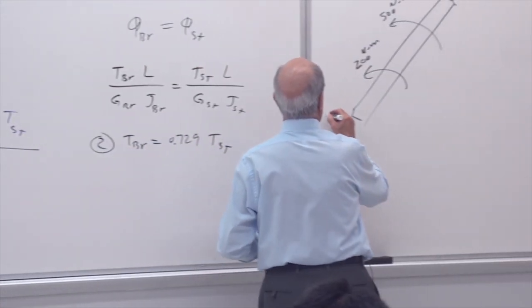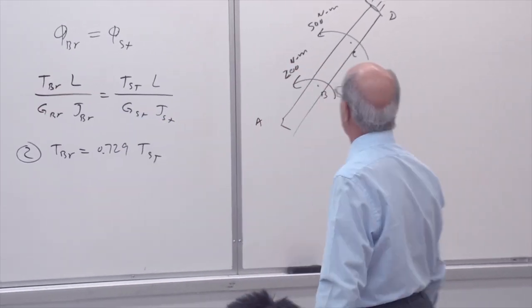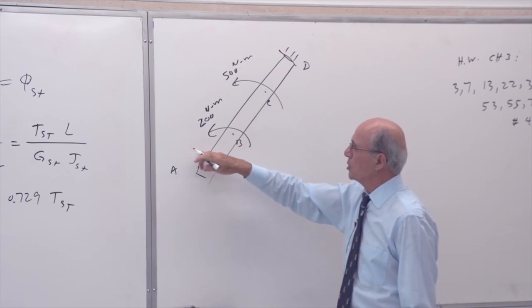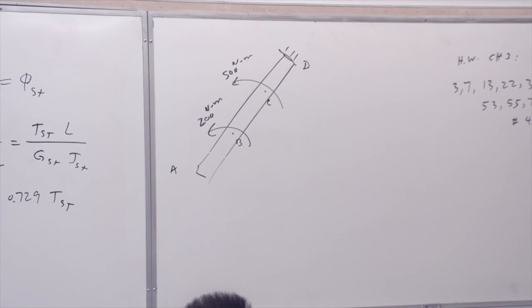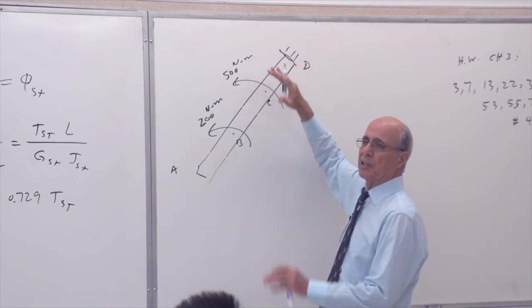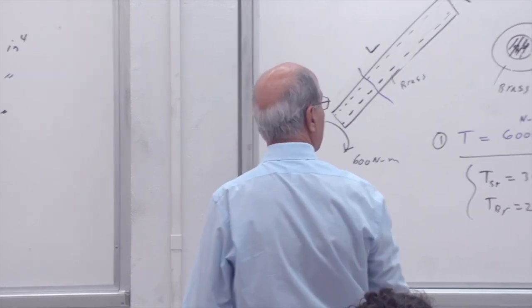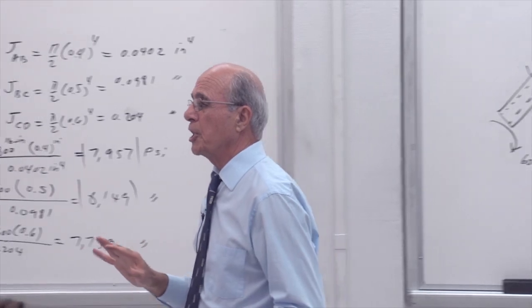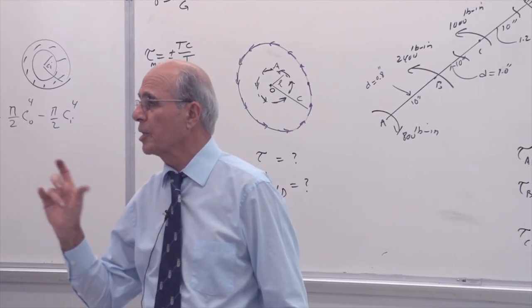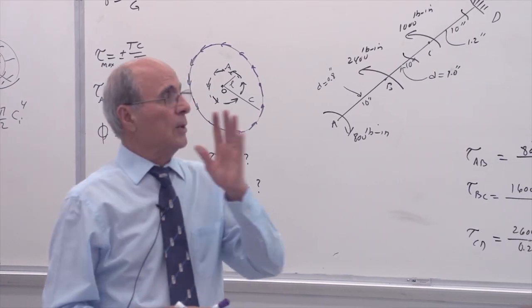Consider shaft ABC with a torque of 200 Newton-meters at B and 500 Newton-meters at C, same lengths throughout. This is a determinate problem. Torque in member AB is zero, torque in member BC is 200, torque in member CD is 700. This is much simpler than the previous example. These are all circular shafts — solid or hollow — that's the only shape we study in this chapter.